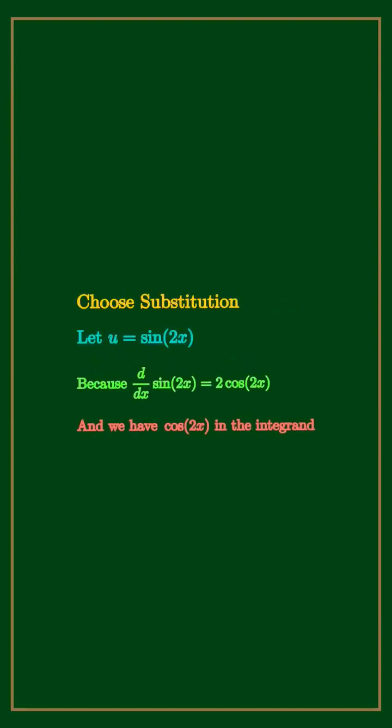We use u substitution. Let u equal sine of 2x because its derivative, 2 cosine 2x, appears in the integrand up to a constant factor.